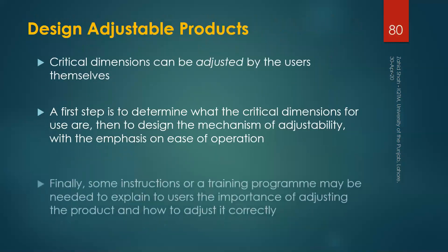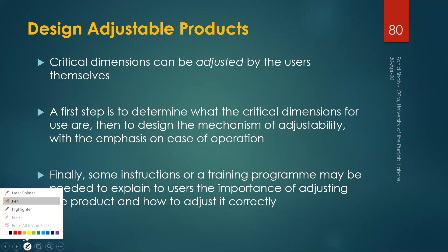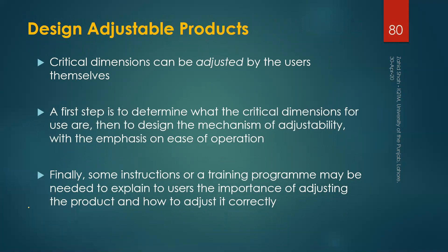The second option for designing for a range of people is to design adjustable products. Here we first identify the dimensions of the product, then the relevant anthropometric dimensions, and thirdly we need to define the critical dimensions that are to be adjusted by the users. Not all dimensions of the product are critical from an adjustability point of view. We may sometimes need training in order to get the user familiar with the mechanism of adjustability.